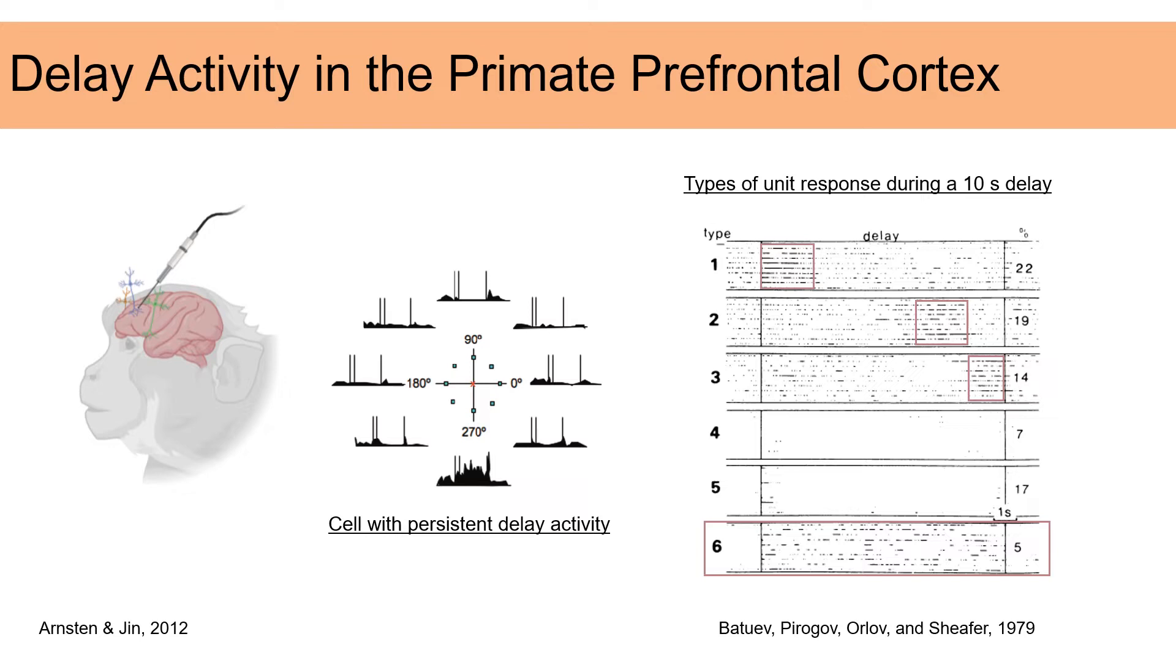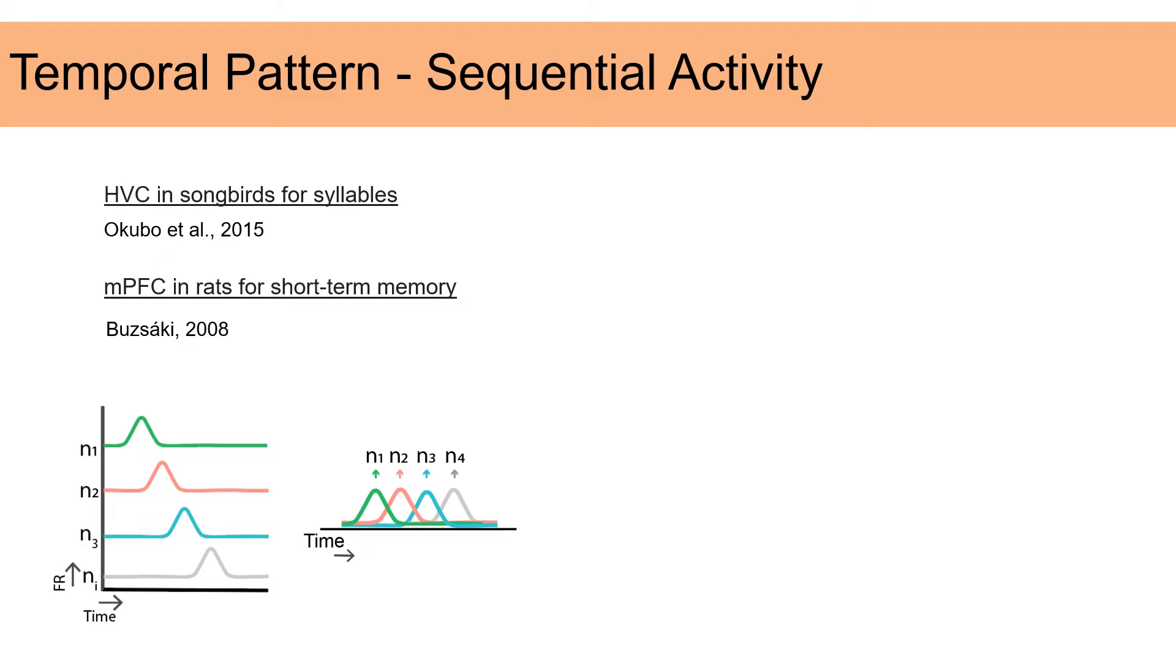And indeed, only 5% of cells actually fired persistently during the entire delay. Going back to this literature, we started thinking that this temporal precision of the activity may be meaningful. More recent technology has allowed for the recording of hundreds of neurons, which has uncovered temporal patterns of firing that were previously undetectable.